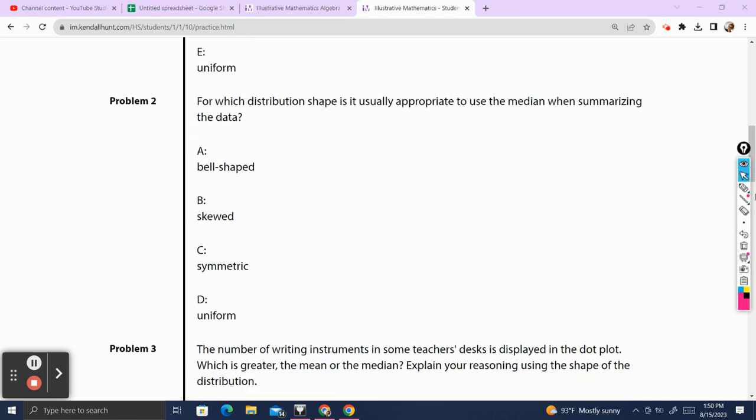For which distribution shape is it appropriate to use the median when summarizing the data? So the bell shape, it would be appropriate to use the median. The skewed, it would be appropriate to use the median. The symmetric, it would be appropriate to use the median. And also the uniform distribution.